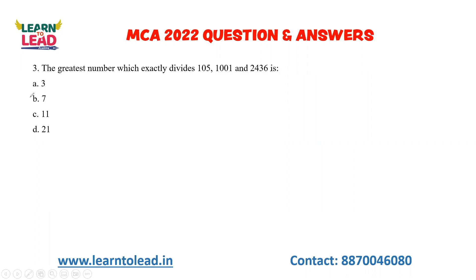If divisibility by 3: 1 + 0 + 5 = 6, which is a multiple of 3, so 105 is divisible. For 1001: 1 + 1 = 2, which is not a multiple of 3, so 3 is not the answer.